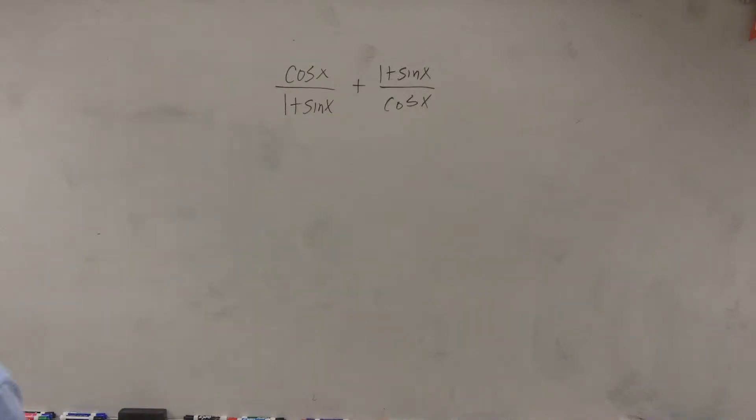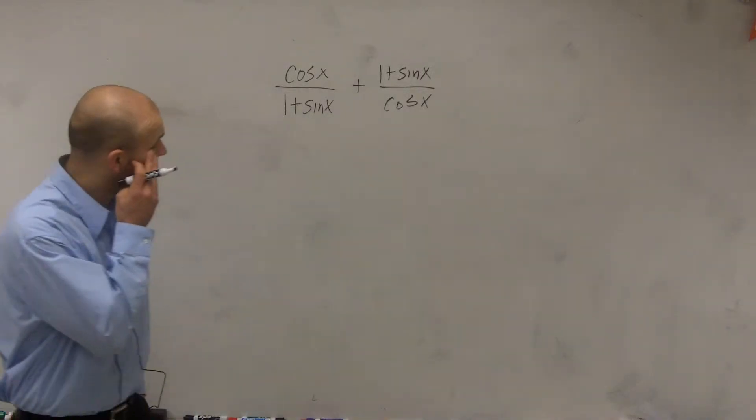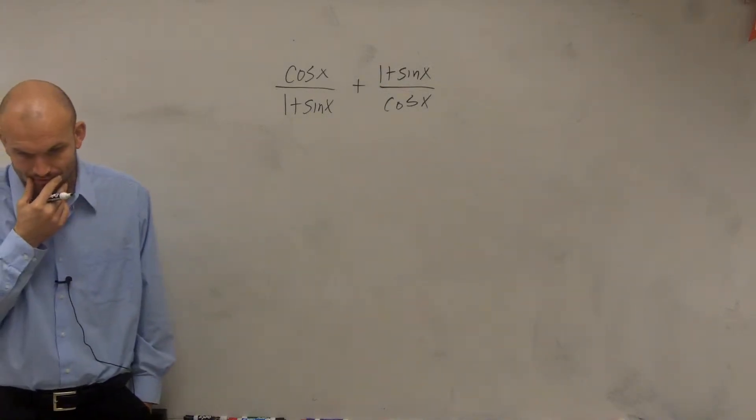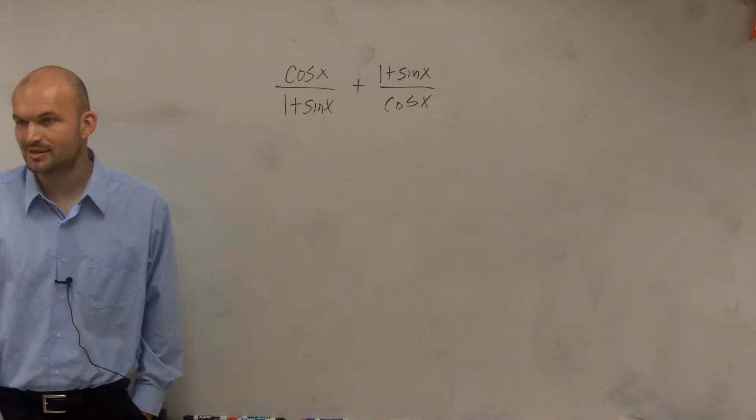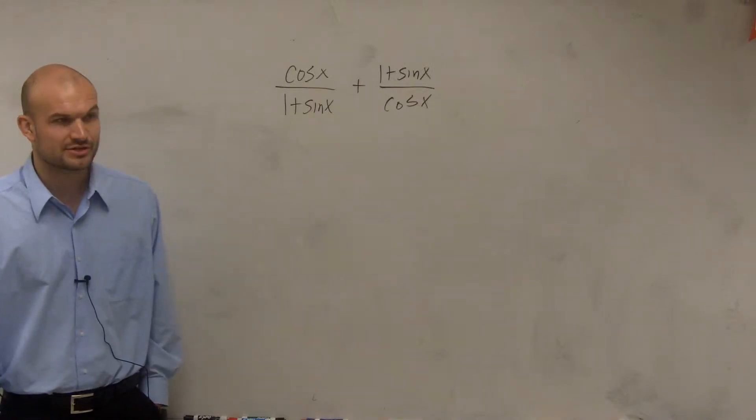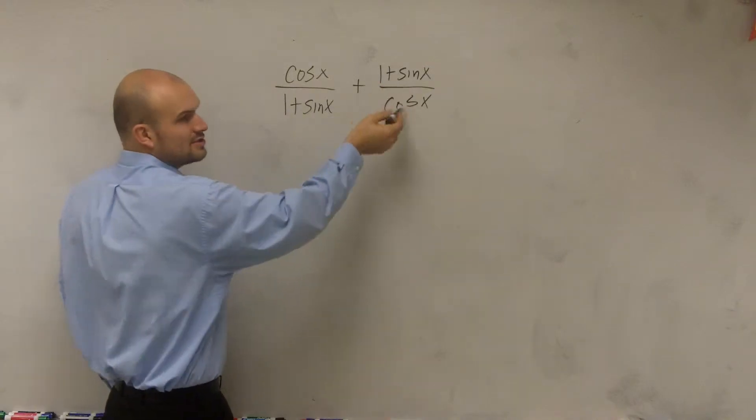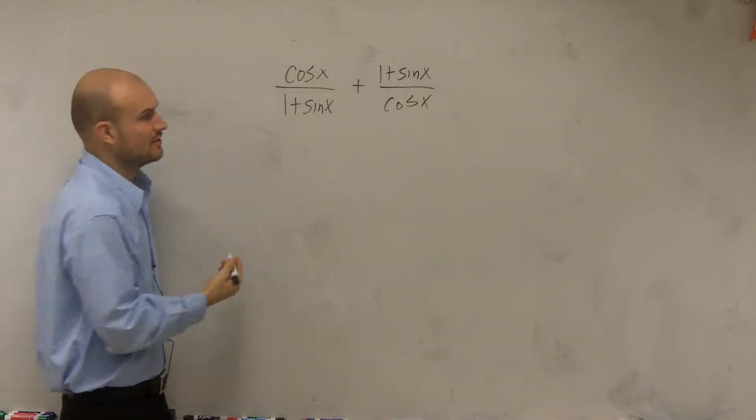All right, so what I have here is the cosine of x divided by 1 plus sine of x, plus 1 plus sine of x divided by cosine of x. If I was going to think about this in elementary terms, I could say these are two different terms, but they're kind of like the reciprocal of each other, right?